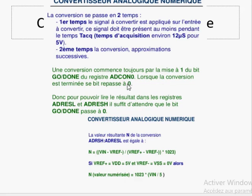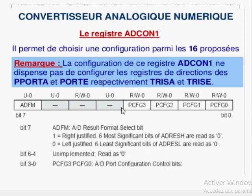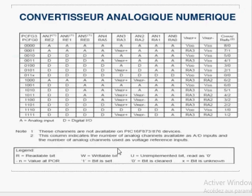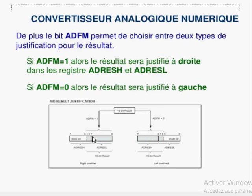Pour le registre ADCON1, le bit ADFM permet de choisir la justification : valeur 1 pour justification à droite, valeur 0 pour justification à gauche. Pour une justification à droite, ADRESL prend la totalité des 8 bits de poids faible, et les 2 bits restants sont mis dans ADRESH. Pour une justification à gauche, ADRESH prend les 8 bits de poids fort, et les 2 bits restants sont dans ADRESL. Le choix dépend de l'application.